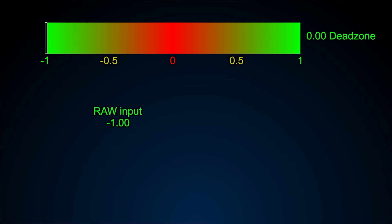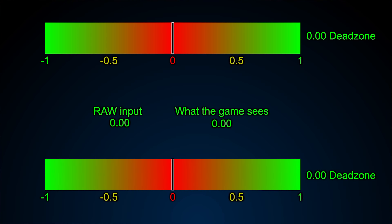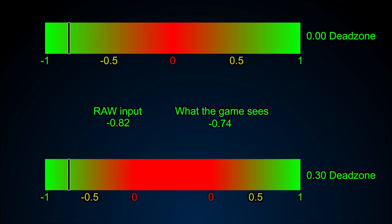Let's look at a one-dimensional example for simplicity. Each axis has a value between minus one and one. The top bar shows the raw value of the controller and the bottom one is what the game sees with the deadzone. Even with a high deadzone it's still possible to make slight and steep turns, but the usable area gets smaller which might make it harder to be precise.